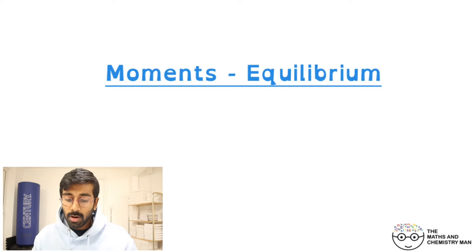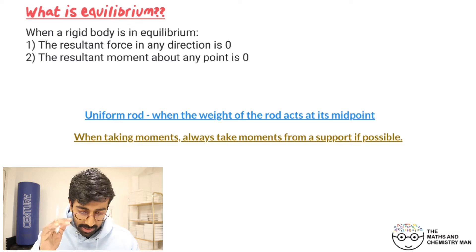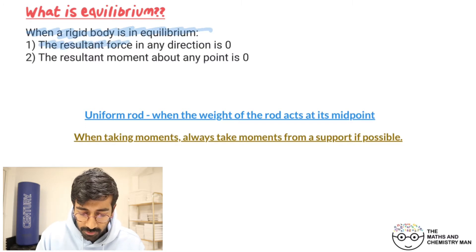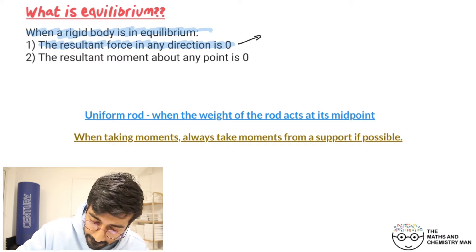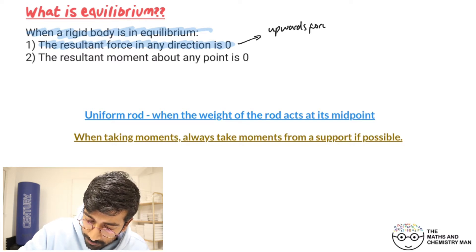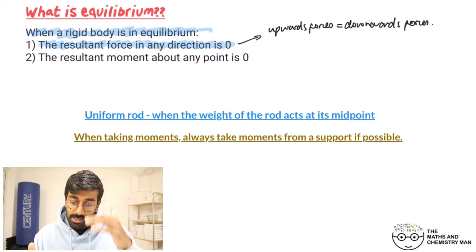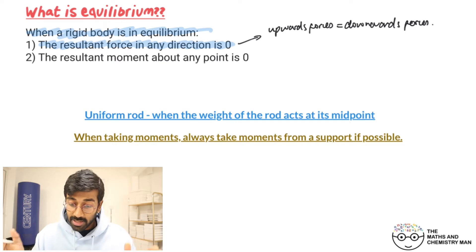We're on the third part of the moments chapter and we're introducing equilibrium. When a rigid body is in equilibrium, the resultant force in any direction is zero. What that means is the upwards forces are equal to the downwards forces, so in the vertical direction the resultant force is zero. We can also say that horizontally the resultant force is zero as well, meaning it's not moving left or right.